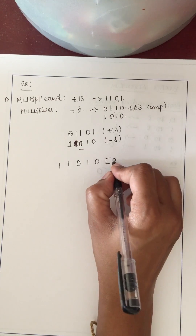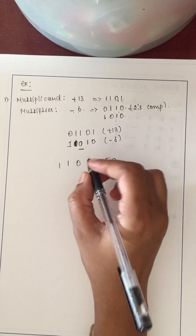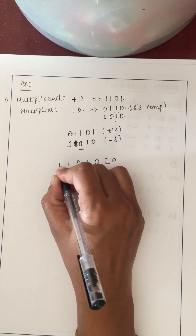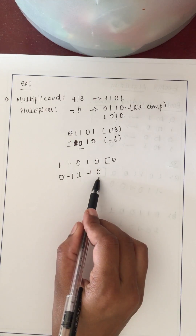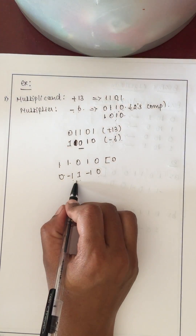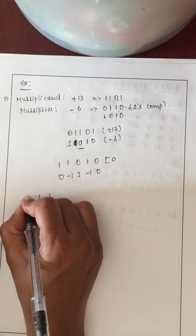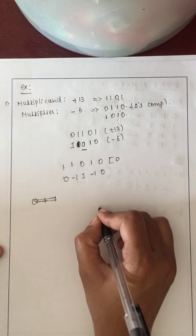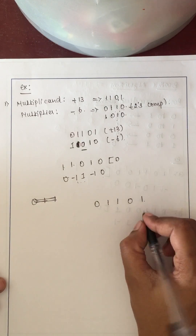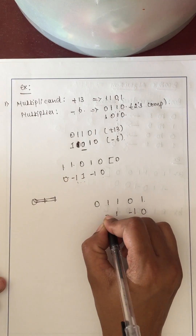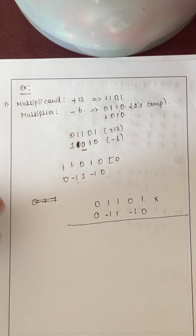Append an imaginary 0 to the right of the multiplier 1 1 0 1 0 and recode combining pairs leftward: 0,0→0; 1,0→-1; 0,1→+1; 1,0→-1; 1,1→0. The recoded multiplier value is 0, -1, +1, -1, 0. Now multiply this recoded value with the multiplicand 0 1 1 0 1.